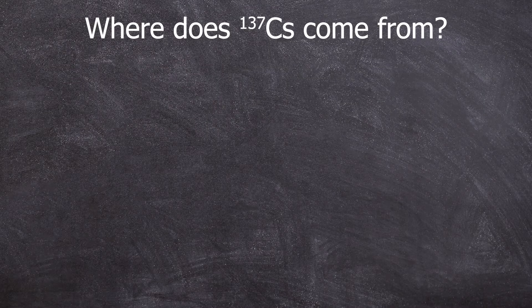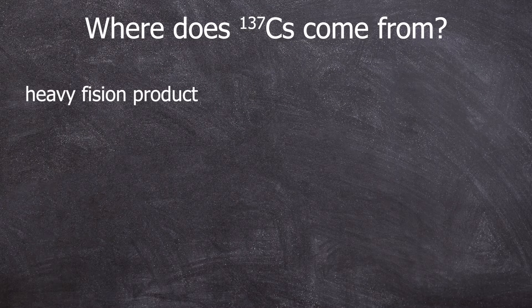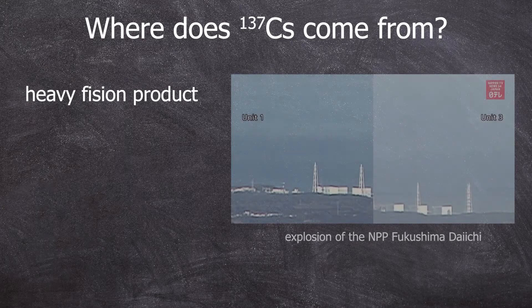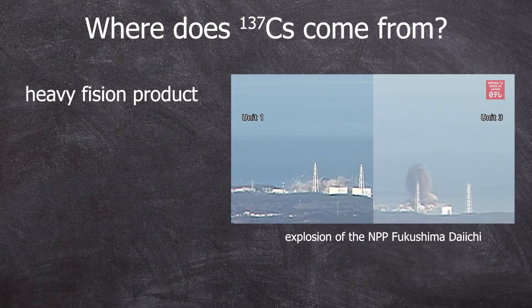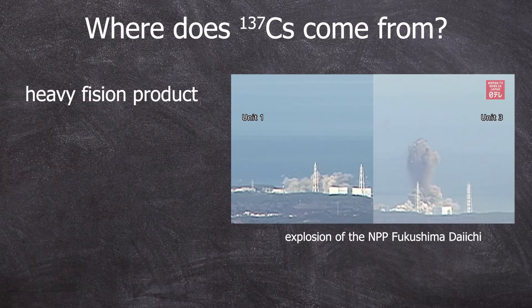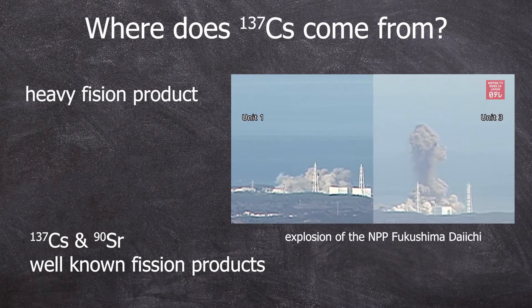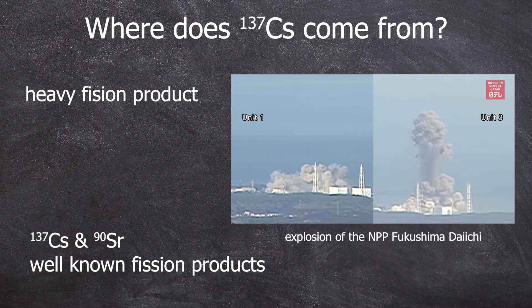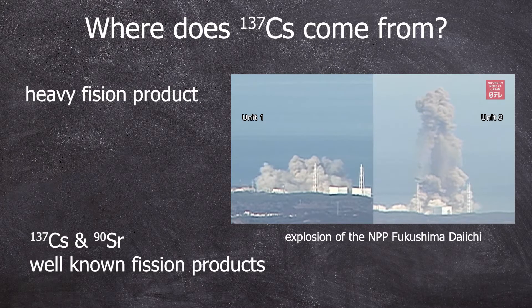Now where does cesium-137 come from? It is formed as one of the heavier fission products during nuclear fission, whether it's in a nuclear weapon or a reactor meltdown like in Chernobyl or Fukushima. Cesium-137 alongside strontium-90 is typically one of the top candidates when it comes to radioactive contamination.